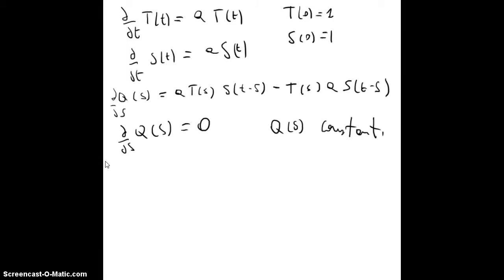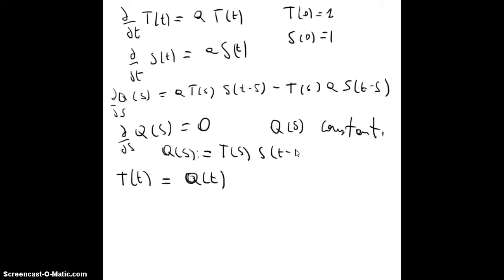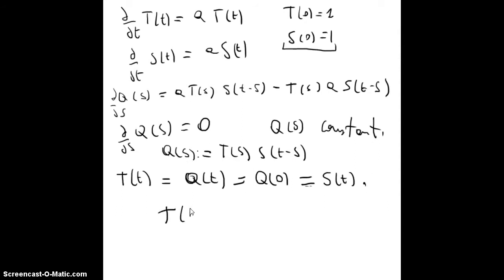Since q(s) is constant, q(t) = q(0). Now q(t) = f(t)·S(0) = f(t), and q(0) = f(0)·S(t) = S(t), since f(0) = 1 and S(0) = 1. Therefore f(t) = S(t), which is exactly the uniqueness we wanted to show.